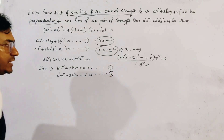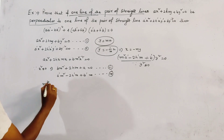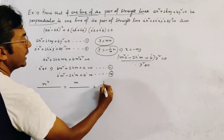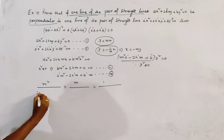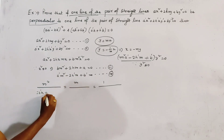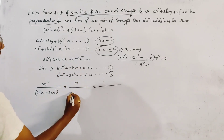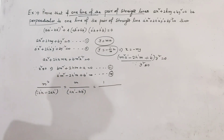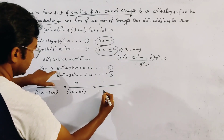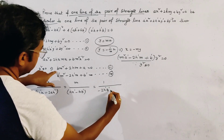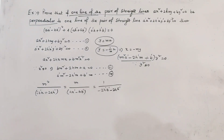From relations 3 and 4, we apply cross multiplication. This gives us m²/(2bh' + 2a'a) = m/(a' - b·b') = 1/(-2h'b - 2ha') from the cross multiplication setup.